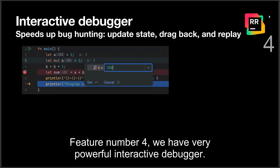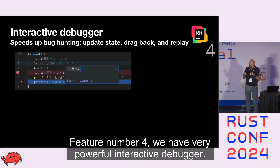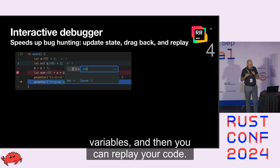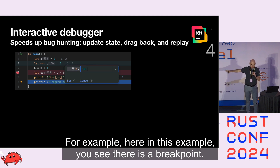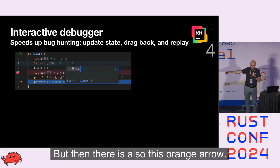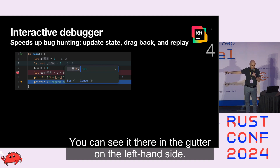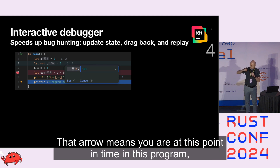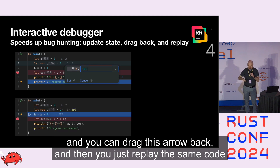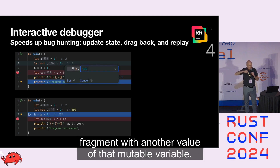Feature number four: we have a very powerful interactive debugger. In that debugger, you can even change values of mutable variables and then replay your code. Here in this example, there is a breakpoint and your program is suspended at that breakpoint. There is also an orange arrow in the gutter on the left-hand side, which means you are at this point in time in the program. You can drag this arrow back and replay the same code fragment with another value of that mutable variable.